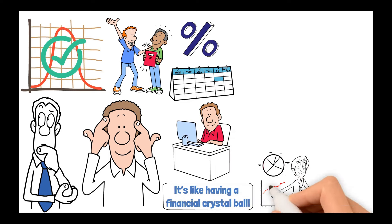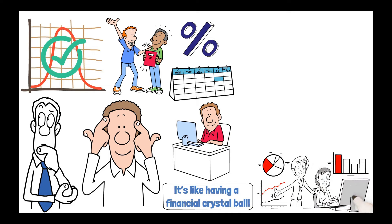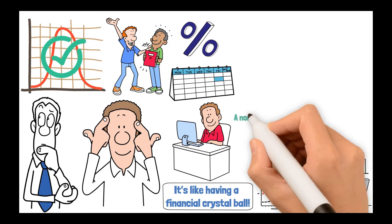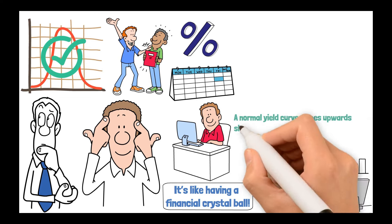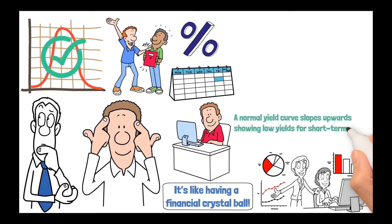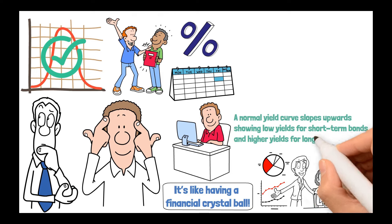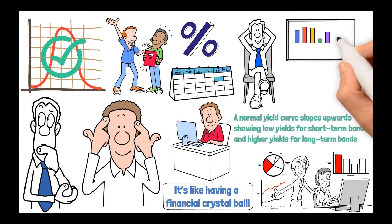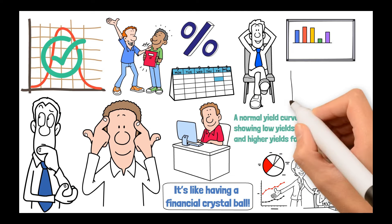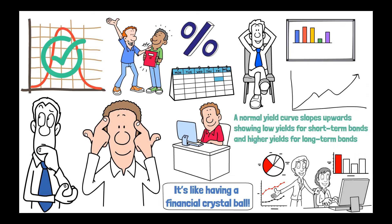When we talk about the yield curve, we're looking at the relationship between short-term and long-term interest rates. A normal yield curve slopes upwards, showing low yields for short-term bonds and higher yields for long-term bonds. Now, this is the market's way of saying, hey, we believe in the economy's growth, so we expect more reward for waiting longer.